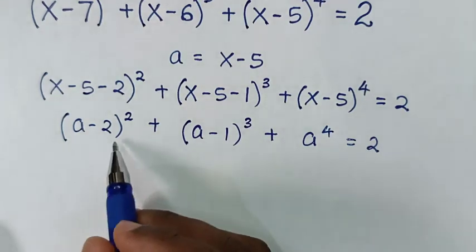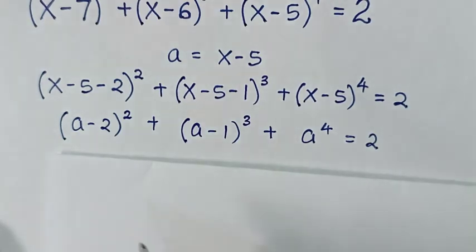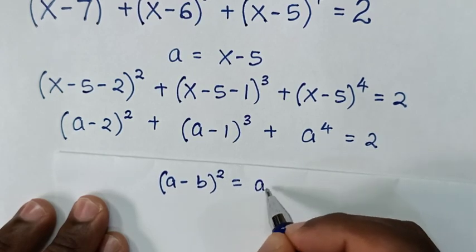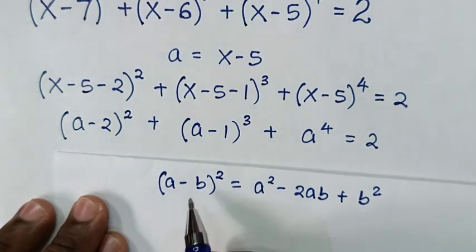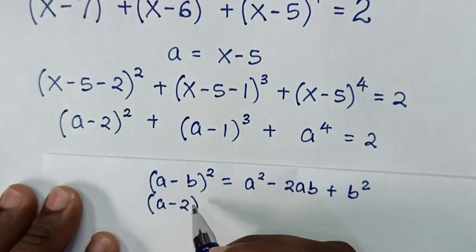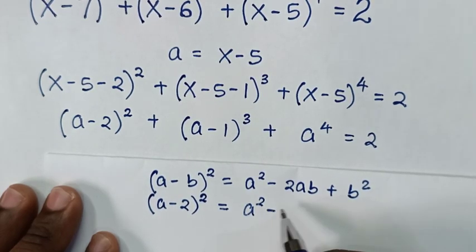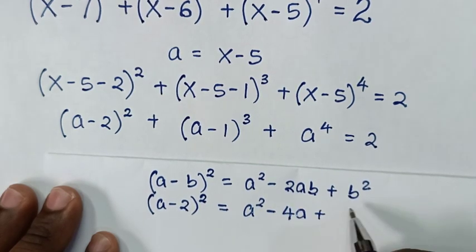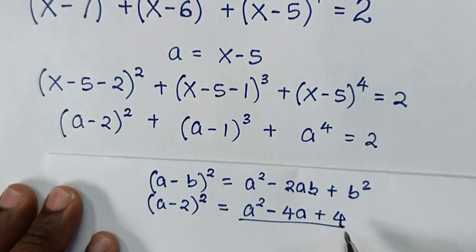We will expand the equation. The first part is in the form (a-b)² = a² - 2ab + b², where b = 2. So (a-2)² = a² - 2(2)a + 2² = a² - 4a + 4. We substitute this into the equation.